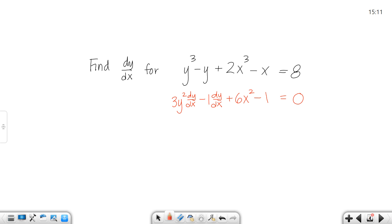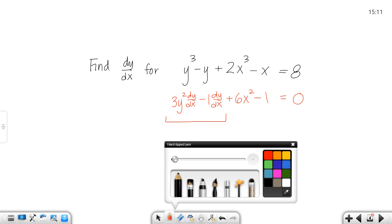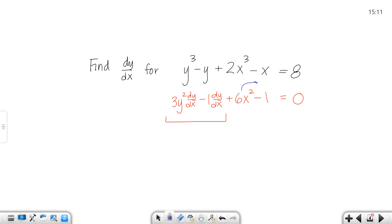Okay, I need to solve this out for dy/dx. So let's leave this group alone and move everything over. So the 6x² moves over and the 1 moves over. So 3y² dy/dx - 1 dy/dx would equal -6x² plus 1.